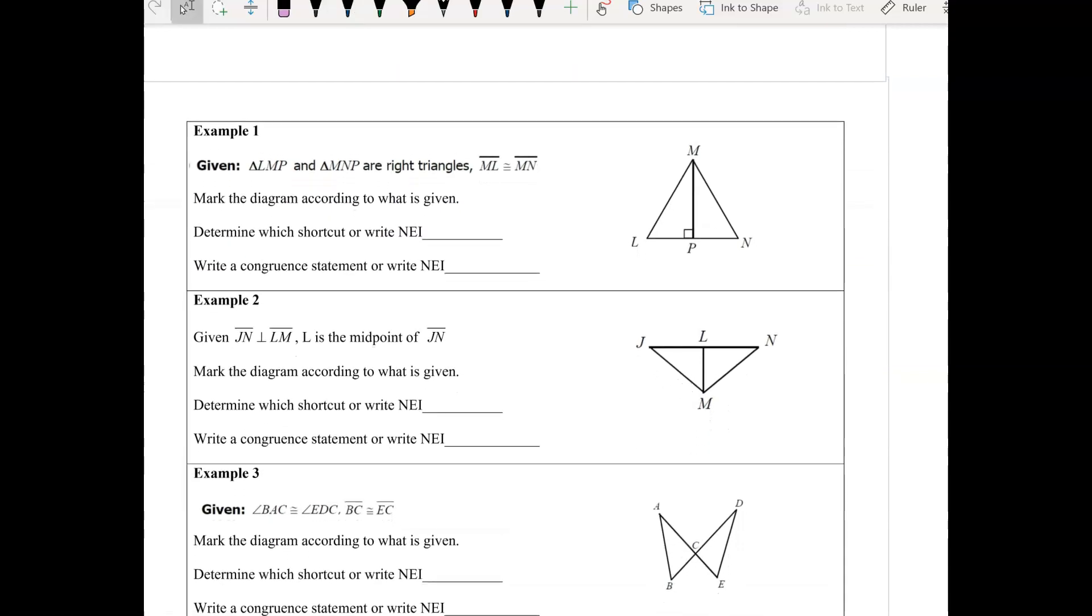Now we're just going to look at some examples, and we have any one of these is possible, except it's going to be a shortcut, it's not going to be the definition, and we're going to go through the process that we've been going through, which is to label what we see by marking the diagram according to the given information.